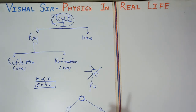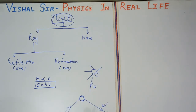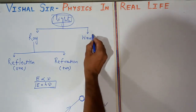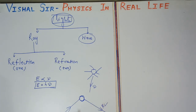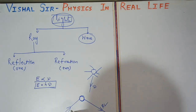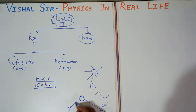Write the first point: light is a form of energy which helps us to see the object. Second point: when light falls on an object, it reflects the light, and when the reflected light reaches our eyes, then we see the object. Third point: light travels in a straight line — it does not take a curved path when we are studying ray optics.